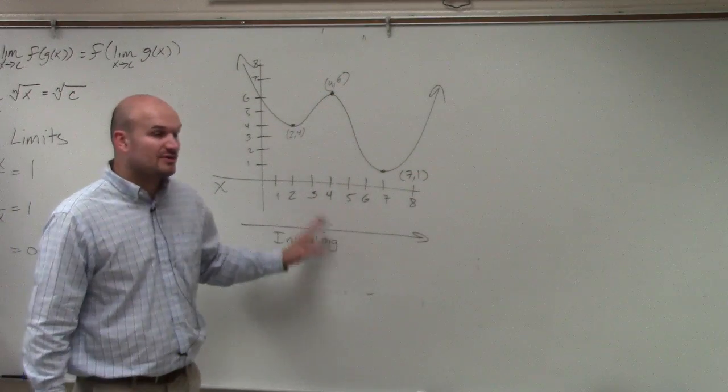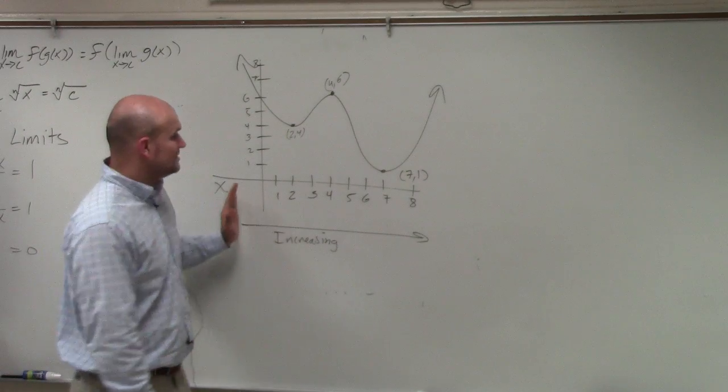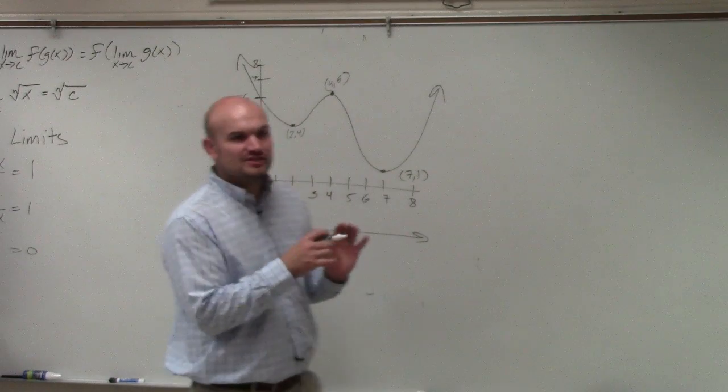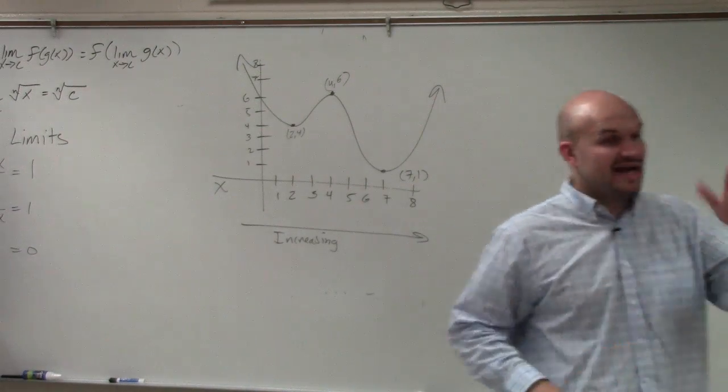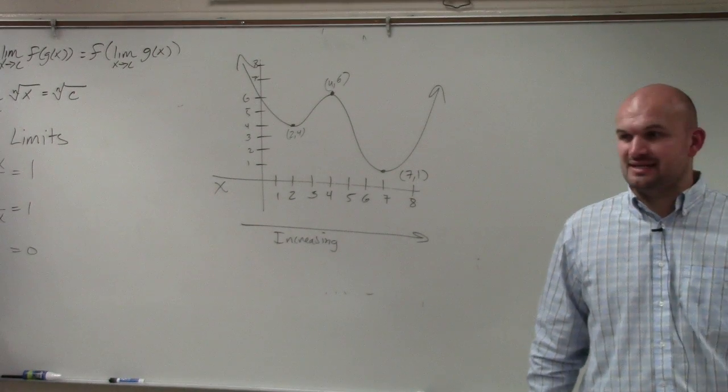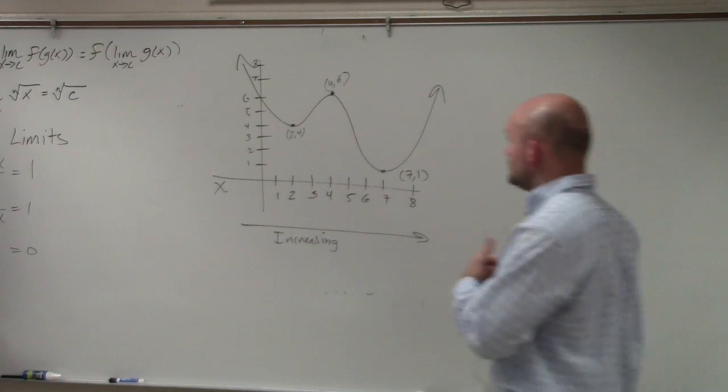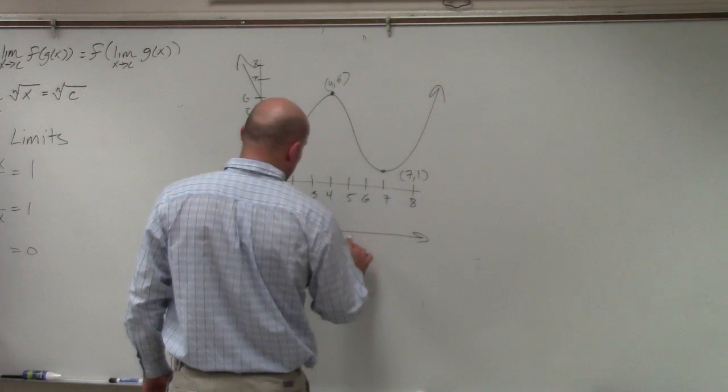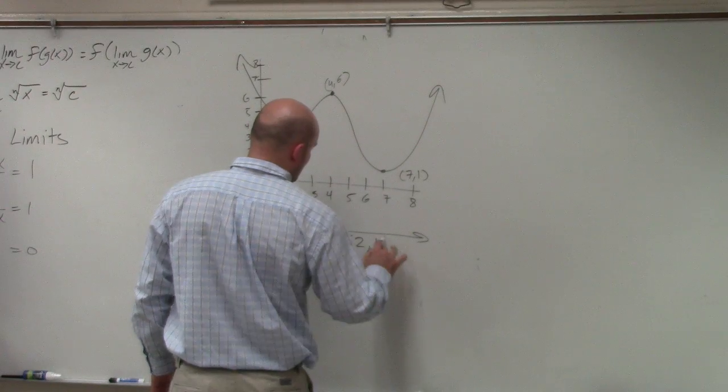So let's look at the values where the graph is increasing. Between what x values does somebody see that the graph, as I read from left to right, is increasing? Does anybody see any x values? Yes, Kayla. 2 to 4. So we'd write it's increasing from 2 to 4.